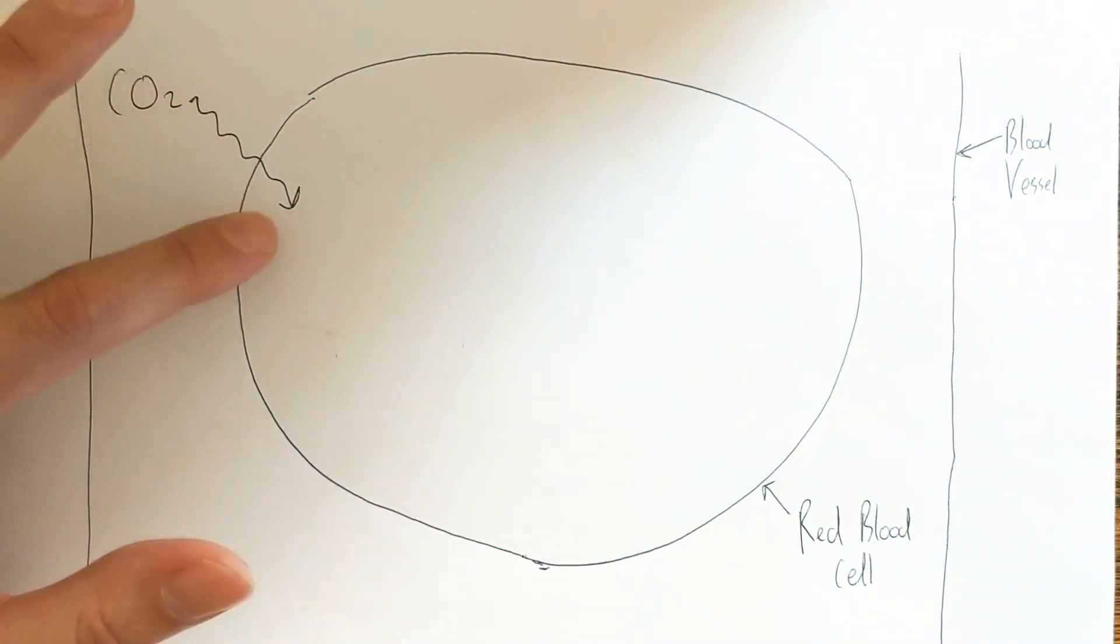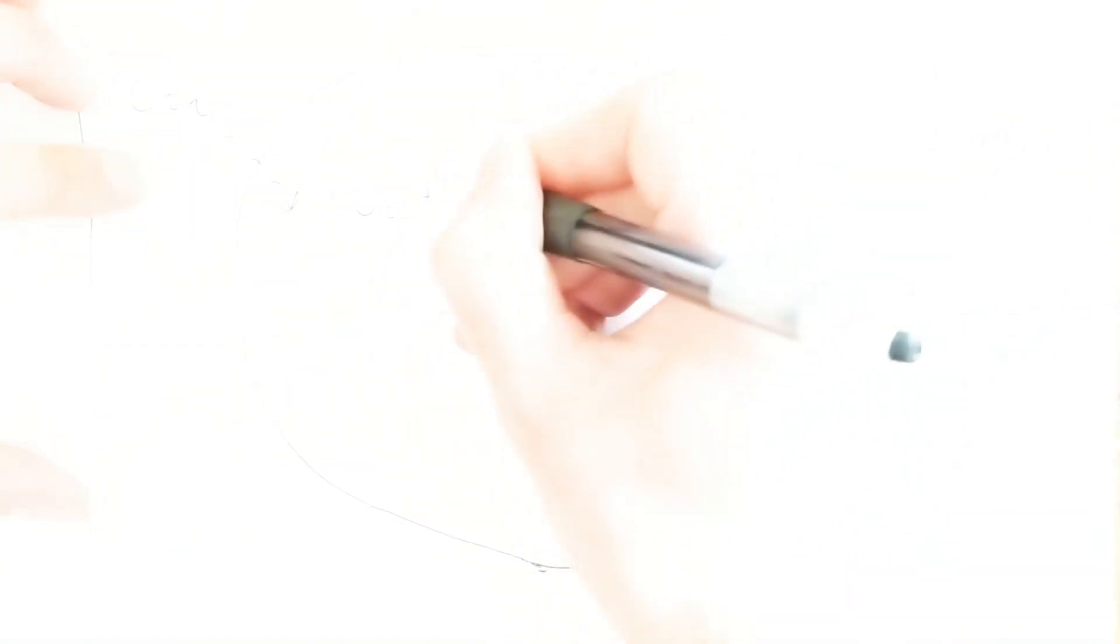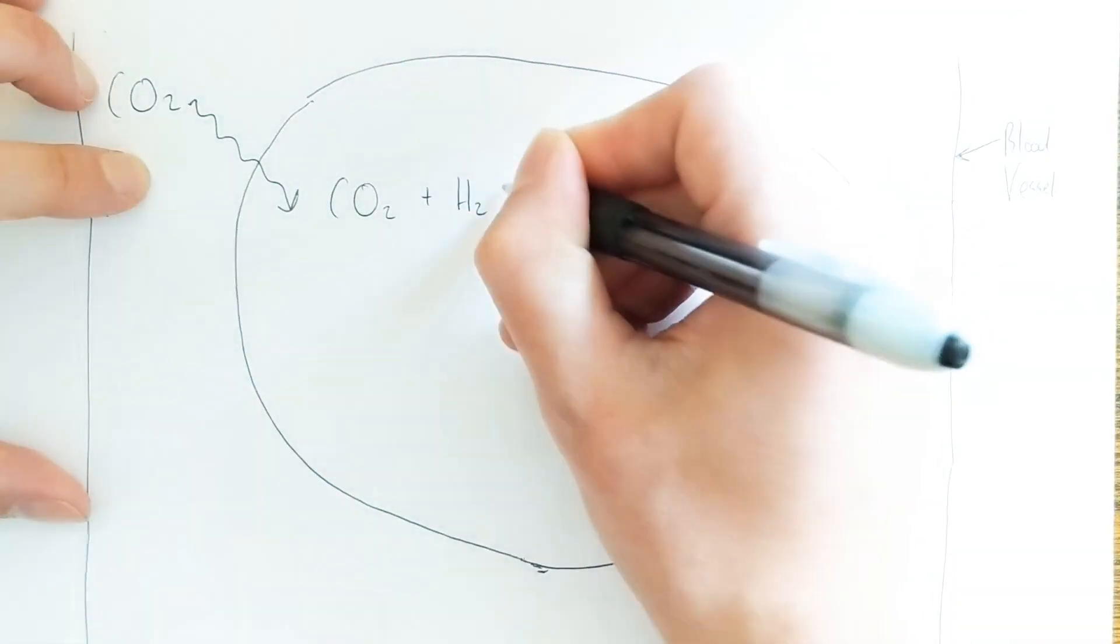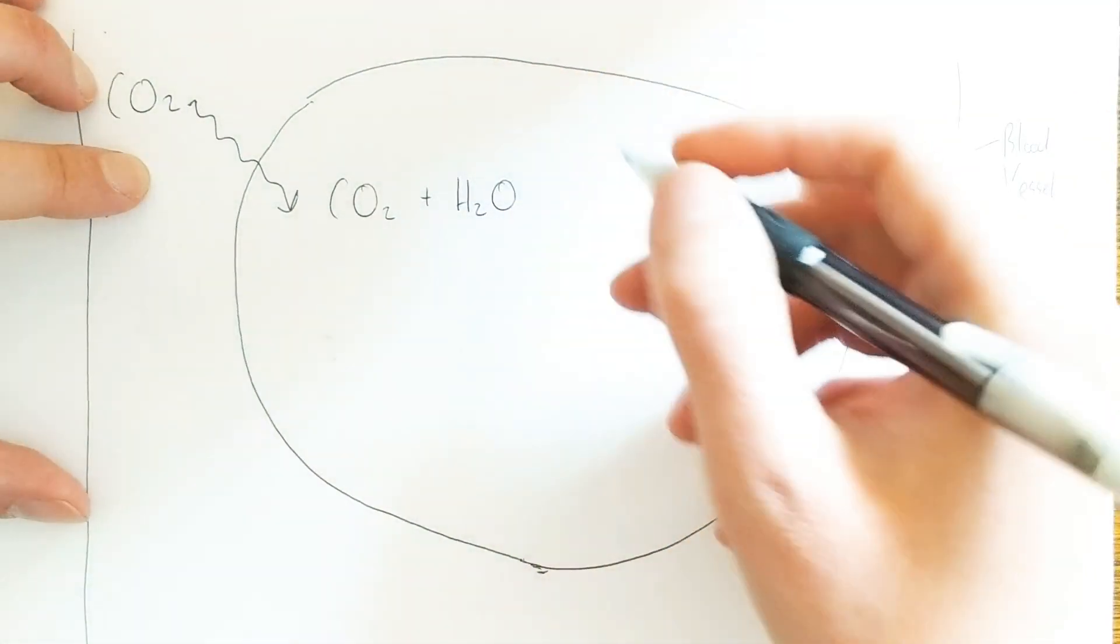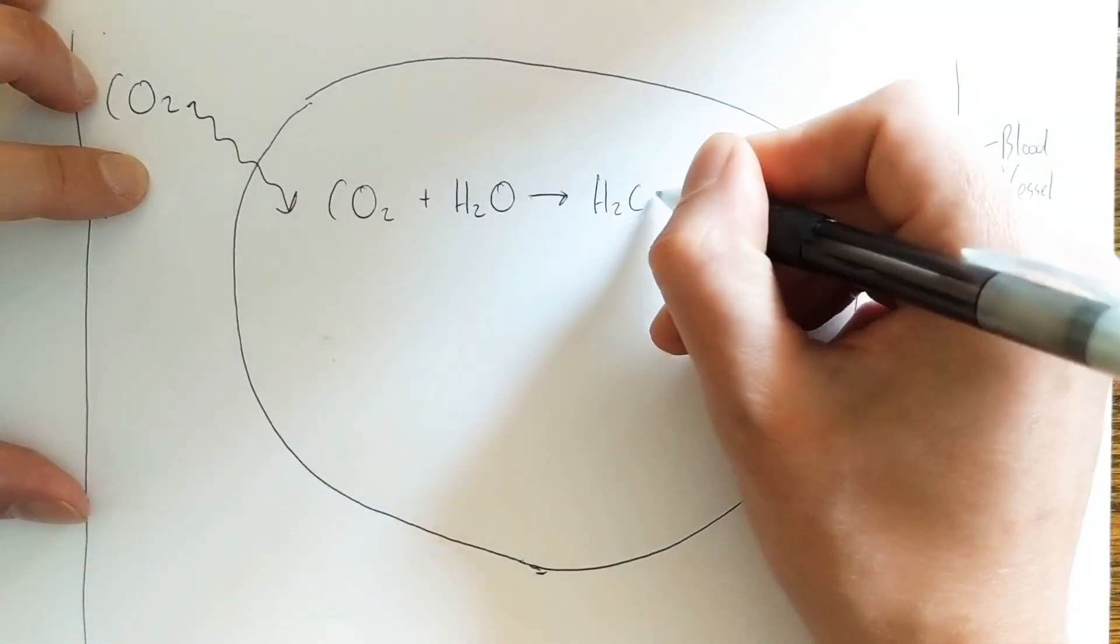So this line here just represents diffusion. Once inside the red blood cell, that carbon dioxide reacts with water to form carbonic acid, which is H2CO3.